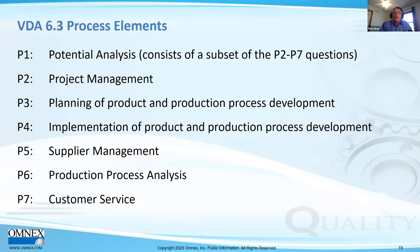P5 is supplier management — how suppliers are sourced, monitored for compliance, and how non-conforming product is handled. P6 looks at the production processes: auditors walk the control plan through each manufacturing process step from receiving to shipping. P7 is customer service — how are customers being satisfied, what is the corrective action process for customer complaints, and is the contingency plan in place?